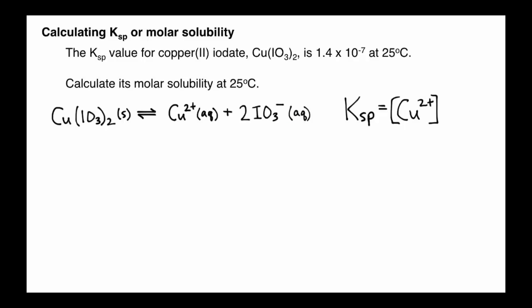We can also write our Ksp, or equilibrium expression from this. So Ksp equals the concentration of copper ions times the concentration of iodate, and we're going to square that because we're forming two iodates here. And again, we're not going to include the solid copper iodate in our Ksp expression because it's a solid.